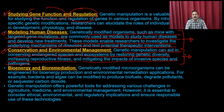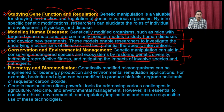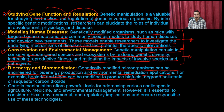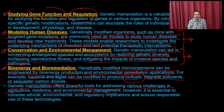We are also going to discuss conservation and environmental management. Genetic manipulation can aid in conserving endangered species and ecosystems by restoring genetic diversity, increasing fitness, and mitigating the impact of invasive species and pathogens. It is very important to maintain balance within the ecosystem — for example, if there is a loss of lizards or snakes, there will be an increased number of frogs or insects that will affect crop yield and human health.